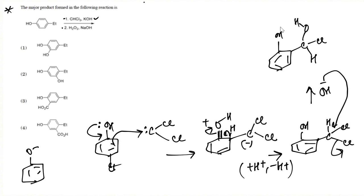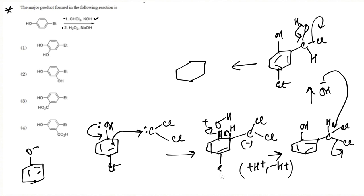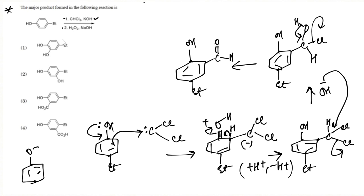The proton is taken up by the base, and after elimination a carbonyl group is introduced at the ortho position to our phenolic OH group. So the product of the Reimer-Tiemann reaction has a carbonyl group ortho to the OH.